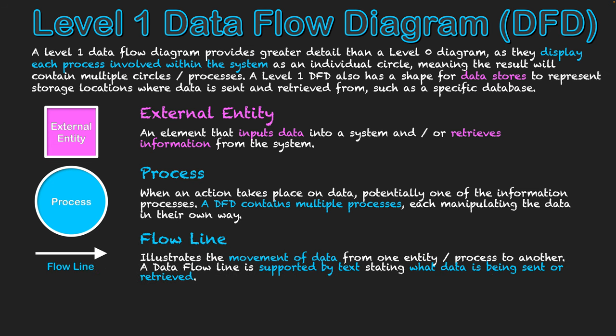Thirdly, we have the flow line once again, which illustrates the movement of data from one external entity to another process. Flow lines don't go between external entities or between external entities and data stores — they need to go through processes because that's where things are happening. They're often labeled with verb-like words, flowing from external entities into a process and between processes, showing how data is being transformed and ultimately sent to an external entity in a required format.